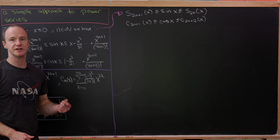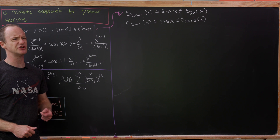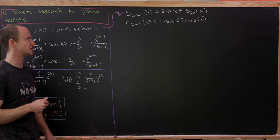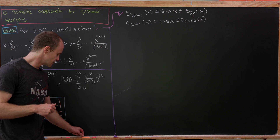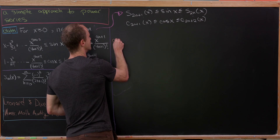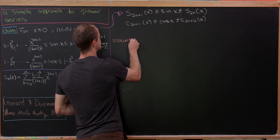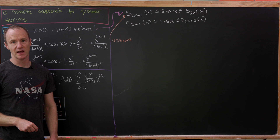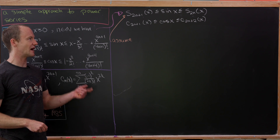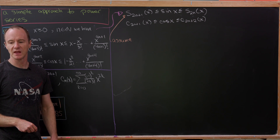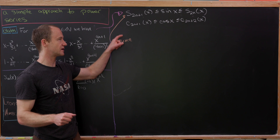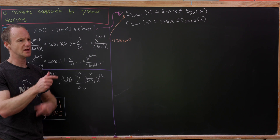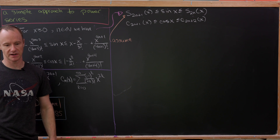We could prove this by induction, and we'll focus on the inductive step since the base case was established in our earlier exploration. We assume the sine inequality is true and show this implies the cosine inequality is true. Likewise, assuming the cosine inequality implies the sine inequality, building a ladder between the two.